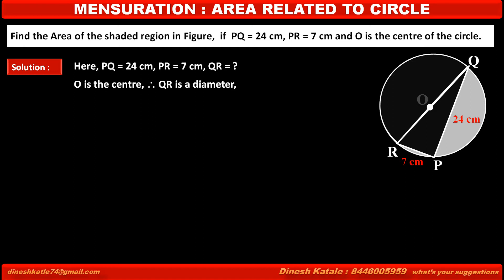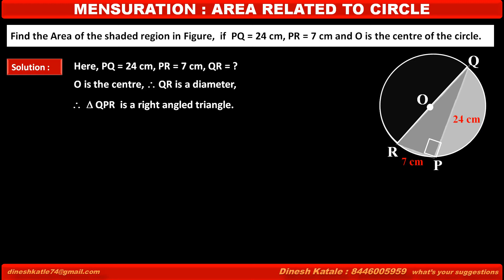Since O is the center of the circle, QR passes through the center and is the diameter of this circle. Since QR is the diameter, angle QPR is an angle subtended by the diameter at the circle, so it is always a right angle. Therefore, triangle QPR is a right angle triangle.